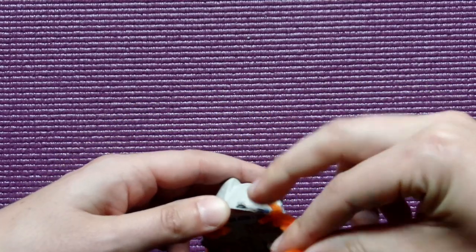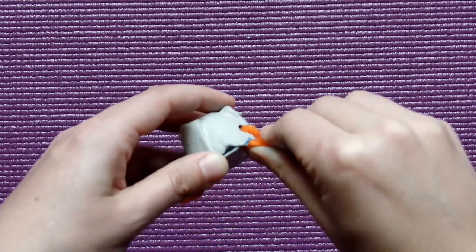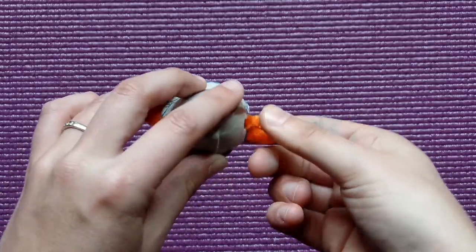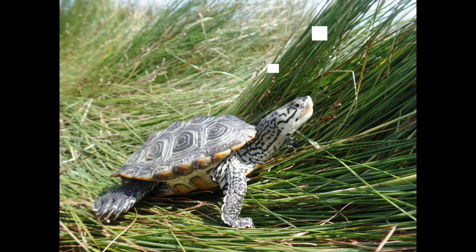Other turtles spend part of their lives in the water and part on land. And they have webbed feet but they also are able to walk on land. Diamondback terrapins are a really unique species that live in Rhode Island. They live in salt marshes which are a mix of fresh and salt water. Most of our native turtle species only live in fresh water.